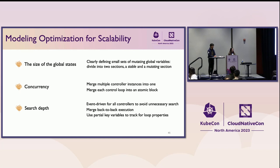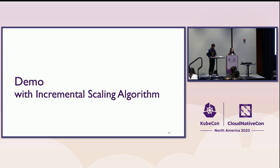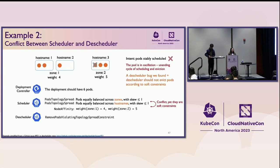We also did some other model optimizations for scalability, but due to time limits I'll leave those slides for you to check offline. Next, Kanwuk will show a demo with the incremental scaling algorithm, demonstrating example two — the conflict between the scheduler and the descheduler.